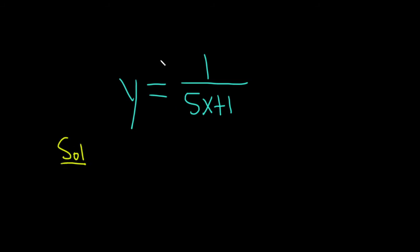Because we have a fraction with a number in the numerator, a good first step is to rewrite it. It's important to notice that the bottom here is really to the first power. So as a preliminary step, we'll take this and bring it upstairs. So this is y equals (5x+1) to the negative 1.